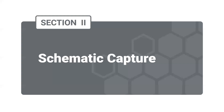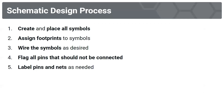Now I'm going to go over the schematic capture process. We're going to have five steps today. We're going to first create and place all the symbols, then assign footprints to the symbols, then wire the symbols as desired, then flag all pins that shouldn't be connected, and then label pins and nets as needed.